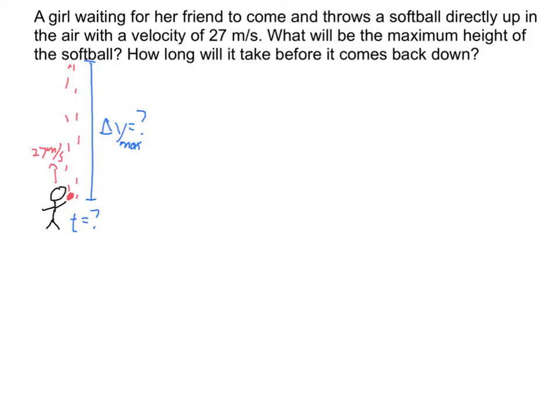Next problem: a girl is going to throw a softball straight up in the air with an initial velocity of 27 meters per second. I want to know what is the maximum height that the softball reaches. How high does it get if she throws it with initial velocity of 27 meters per second? Delta y max — we use the letter S to stand for displacement, but change in position on the y-axis is what that's talking about. In other words, we're solving for displacement here. Let's make a variable bank.